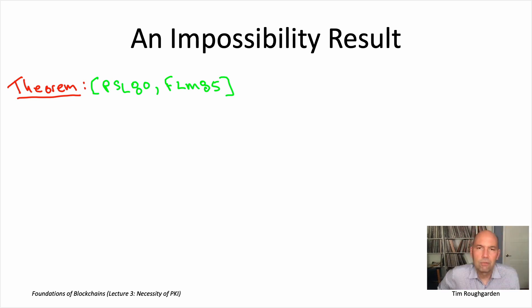And what this theorem is going to say is Byzantine broadcast, the same problem that we focused on in lecture two, is actually unsolvable if you have too many Byzantine nodes. In particular, if at least a third of the nodes are Byzantine.